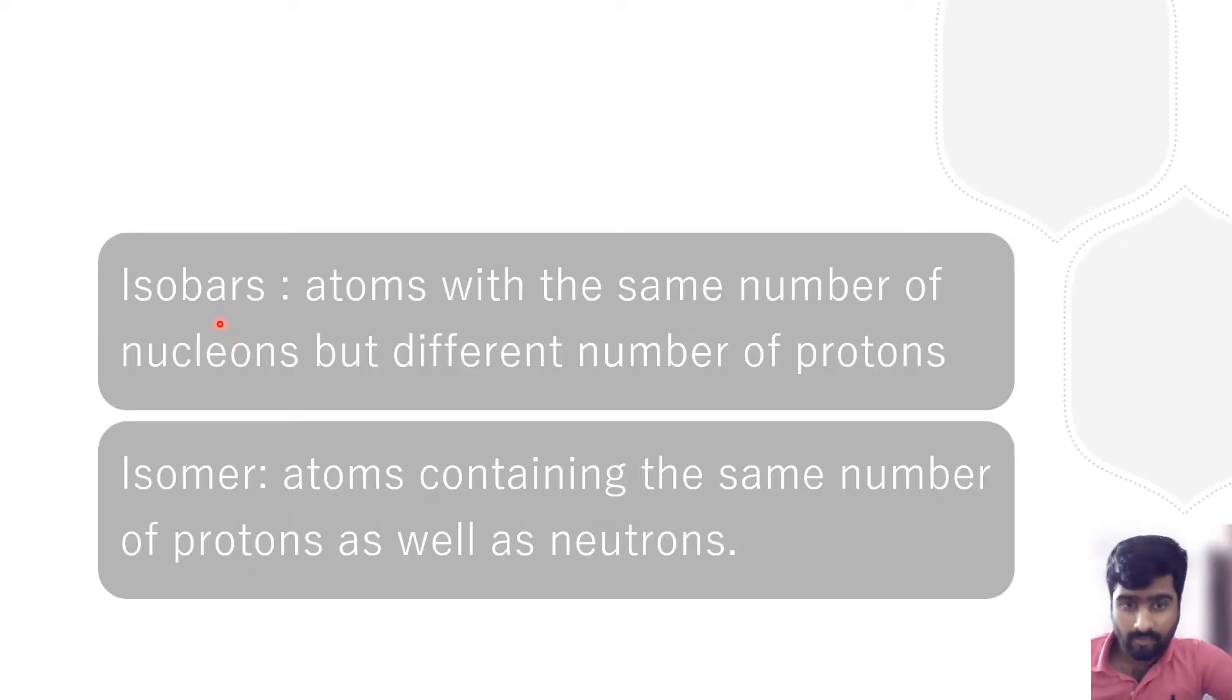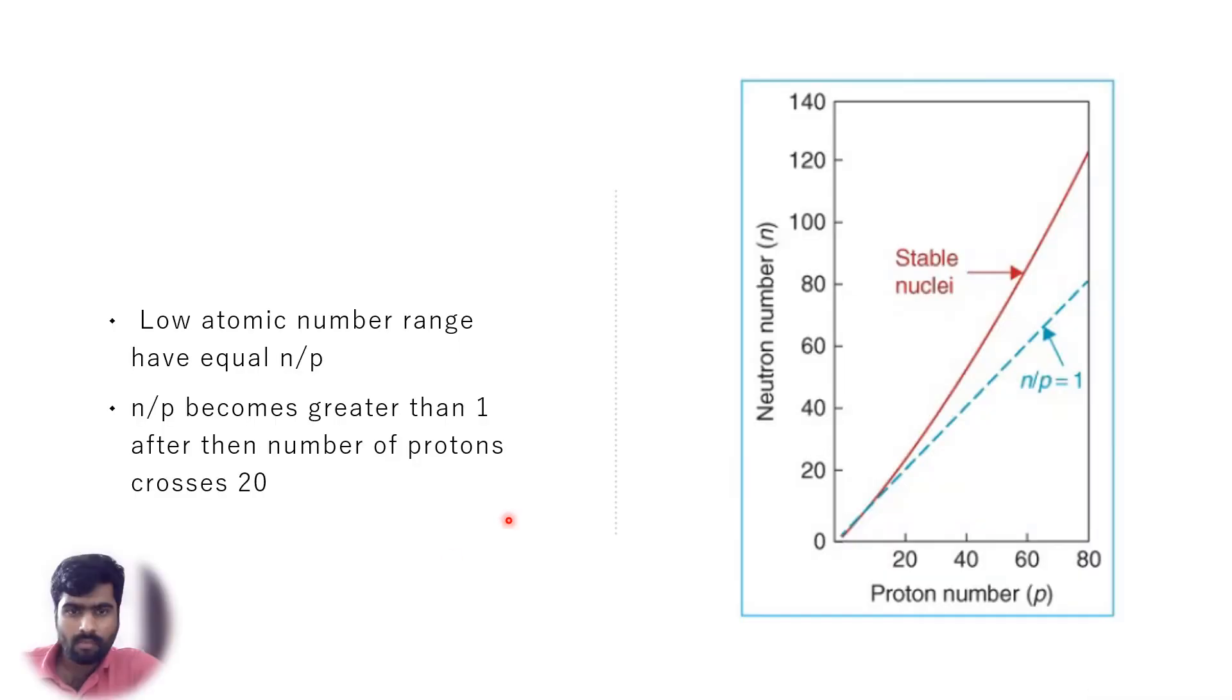Let's discuss isobars: atoms with the same number of nucleons but different number of protons. Nucleons is protons plus neutrons. Isomers are atoms containing the same number of protons as well as neutrons.